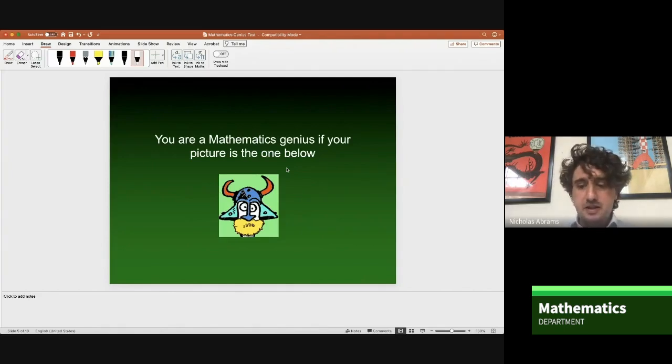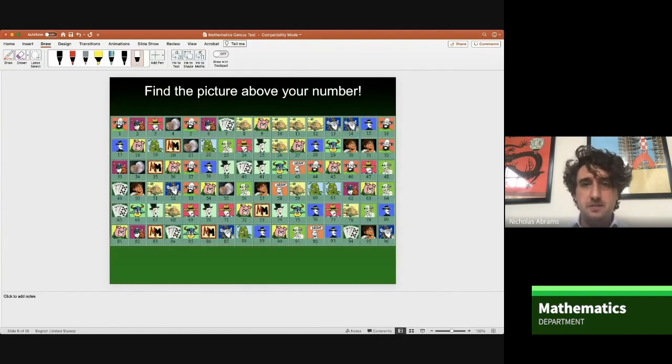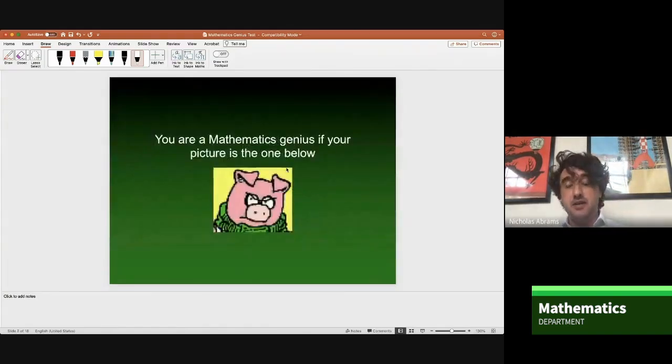Okay. Now your final answer, what I want you to do is on this screen here, I want you to find the picture above your number. So find the right number and then find the picture. And then again, if you're staring at a specific picture, it turns out you're a mathematical genius. And the picture you should be staring at is this picture here. If you're staring at that picture, you are a mathematical genius.